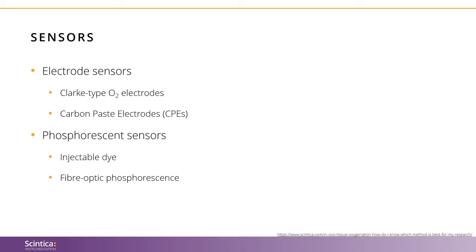Clark-type oxygen electrode sensors are electrochemical sensing instruments where the chemical element of interest — in our case oxygen — passes through a Teflon membrane and chemically interacts with the electrolyte and platinum cathode in the sensor to produce electrons, in other words a current. The current strength is proportional to oxygen in the tissue. These sensors determine the partial pressure of oxygen, but not the absolute concentration.